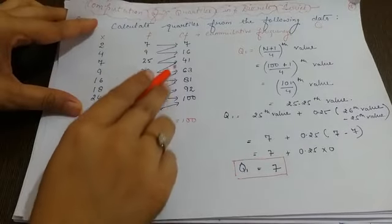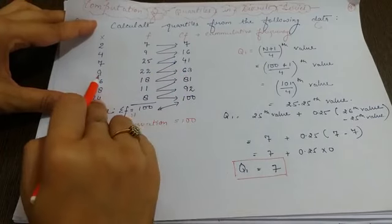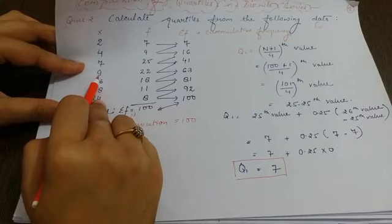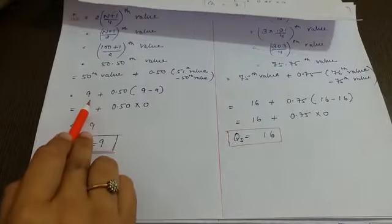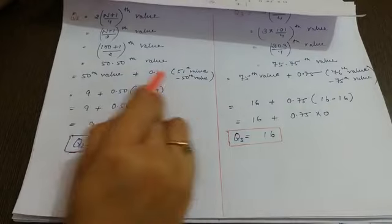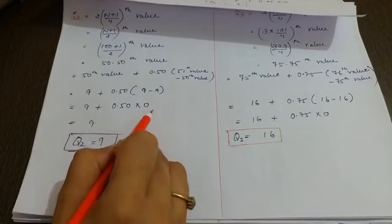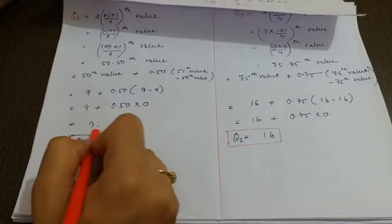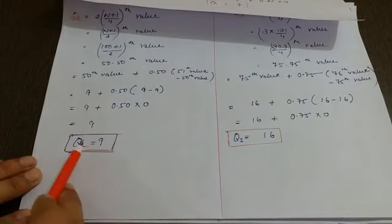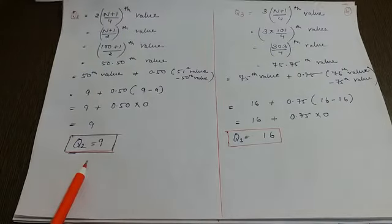So here we can see 50th and 51st value. 50th and 51st will fall in this category, because 41 is less than this. So in this case, the value is 9. That is for both 50th and 51st. So 51st value is 9 and 50th value is 9. When you multiply, 9 minus 9 will give 0. And after multiplying you will get 0. So here it will be 0. After this, your second quartile value will come, that is q2 is equal to 9.